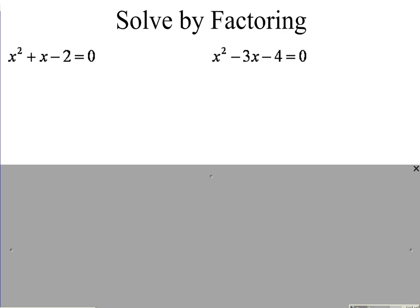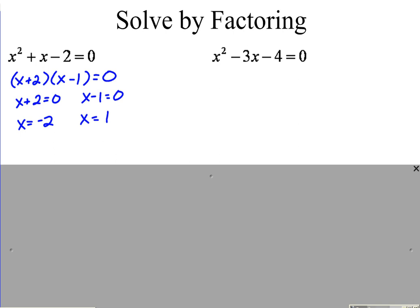The first two problems say to solve by factoring, so we'll go ahead and factor them. Using our work with factoring trinomials — three terms into two binomials — numbers that multiply to be negative two and add up to be positive one are positive two and negative one. Once factored and set equal to zero, set each factor equal to zero and solve. We get negative two and positive one as the two solutions.